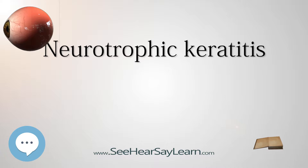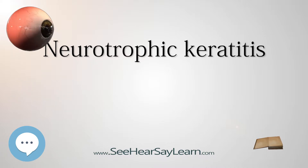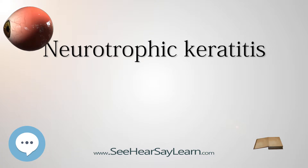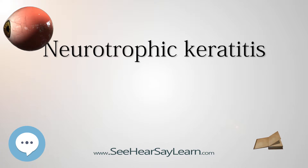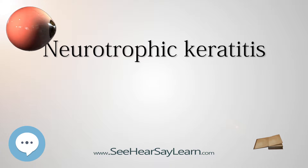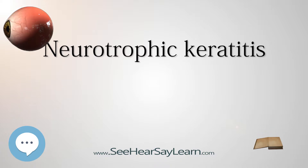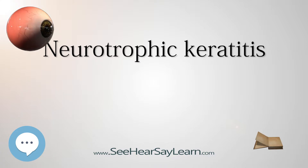Congenital or acquired ocular and systemic diseases can determine a lesion at different levels of the trigeminal nerve, which can lead to a reduction, hypoesthesia, or loss, anesthesia, of sensitivity of the cornea. The most common causes of loss of corneal sensitivity are viral infections, herpes simplex and herpes zoster ophthalmicus.